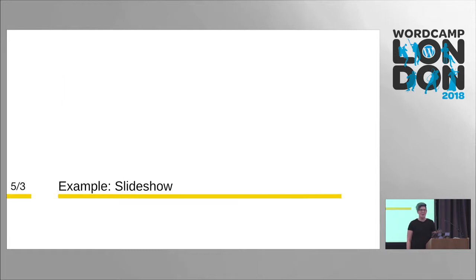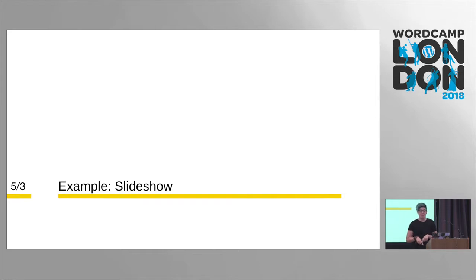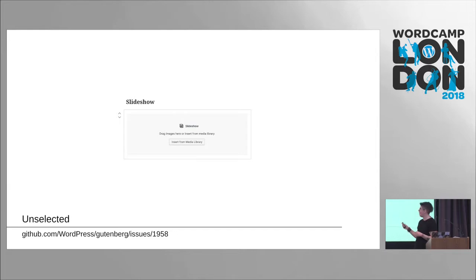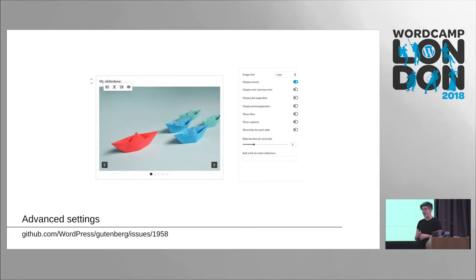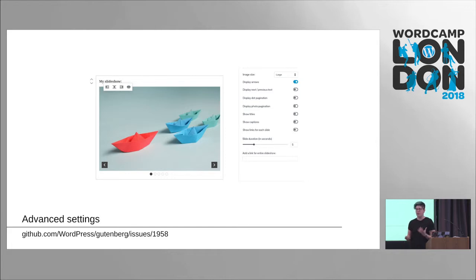Now let's go even more complicated than the gallery and look at the slideshow block. It's similar to the gallery so I won't show every state, but it has a lot more options. You can actually follow this along on GitHub — this is an issue where it's being developed, though it probably won't ship with Gutenberg. The advanced settings for the slideshow expose many options, but these are secondary. If you had these right in the toolbar it wouldn't be a great user experience — having them to the side works well.